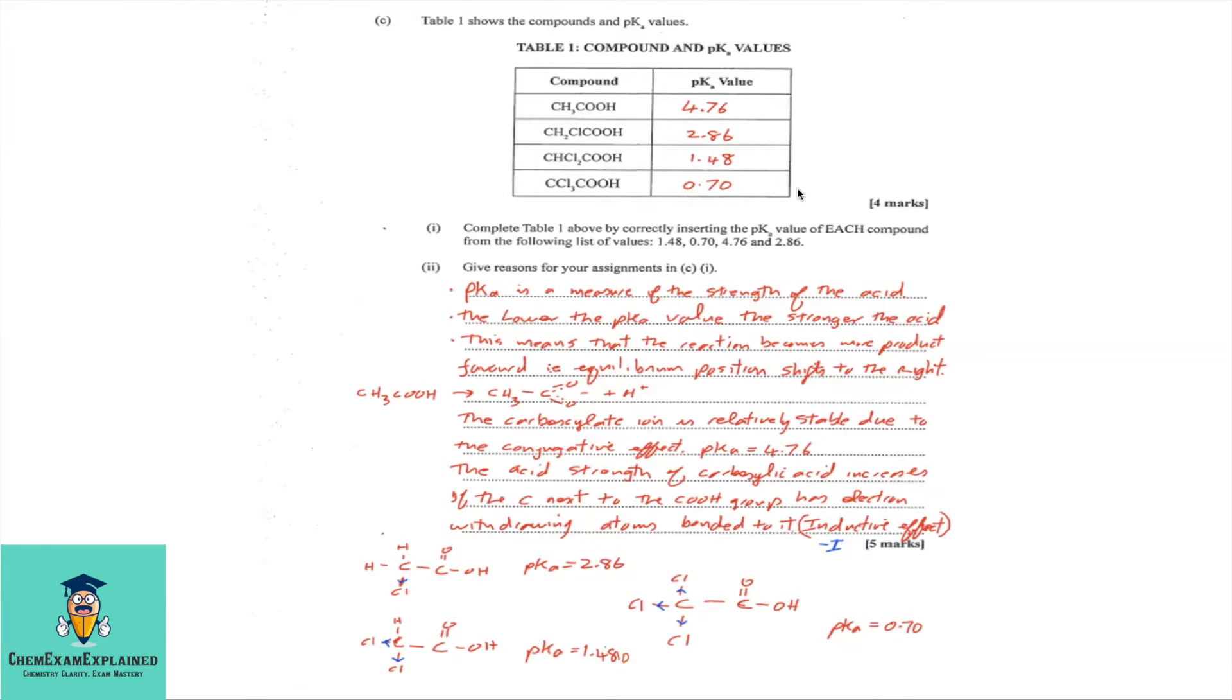C part 2, give reasons for your assignment in C part 1. Let's look at the answer now for C part 1. So, pKa is a measure of the strength of the acid. The lower the pKa value, the stronger the acid. This means that the reaction becomes more product-favored. Because if you are dissociating, then you are more product-favored than reactant-favored. So, equilibrium position will shift to the right. Looking at the dissociation between the ethanoic acid and water, you'll see that you form the ethanoate ion and H-plus ion. So, that is the carboxylate ion.